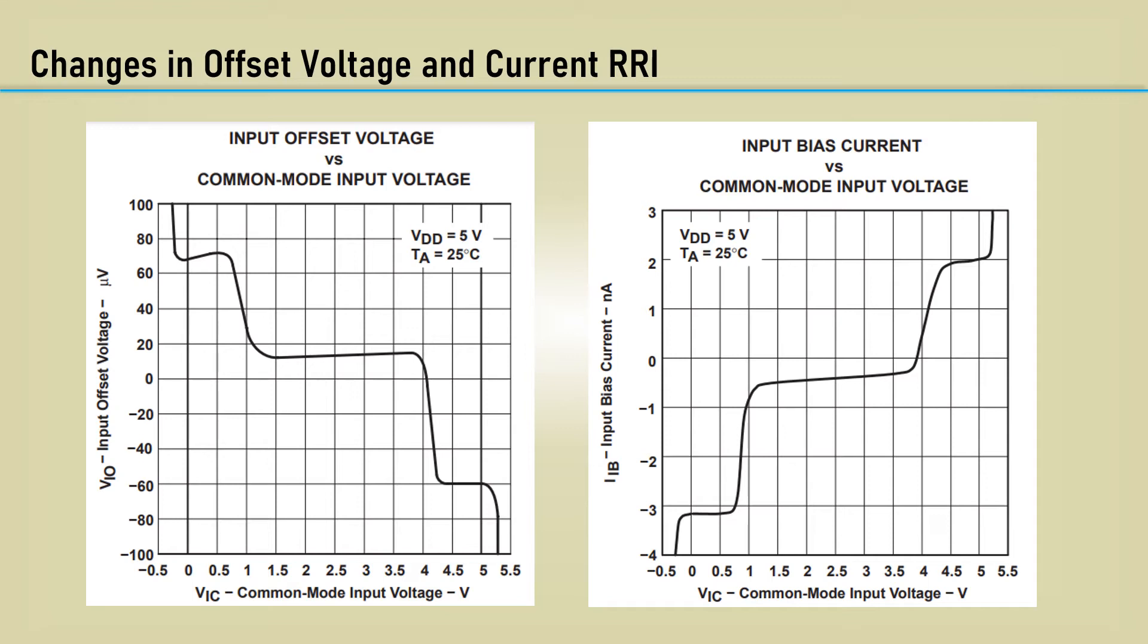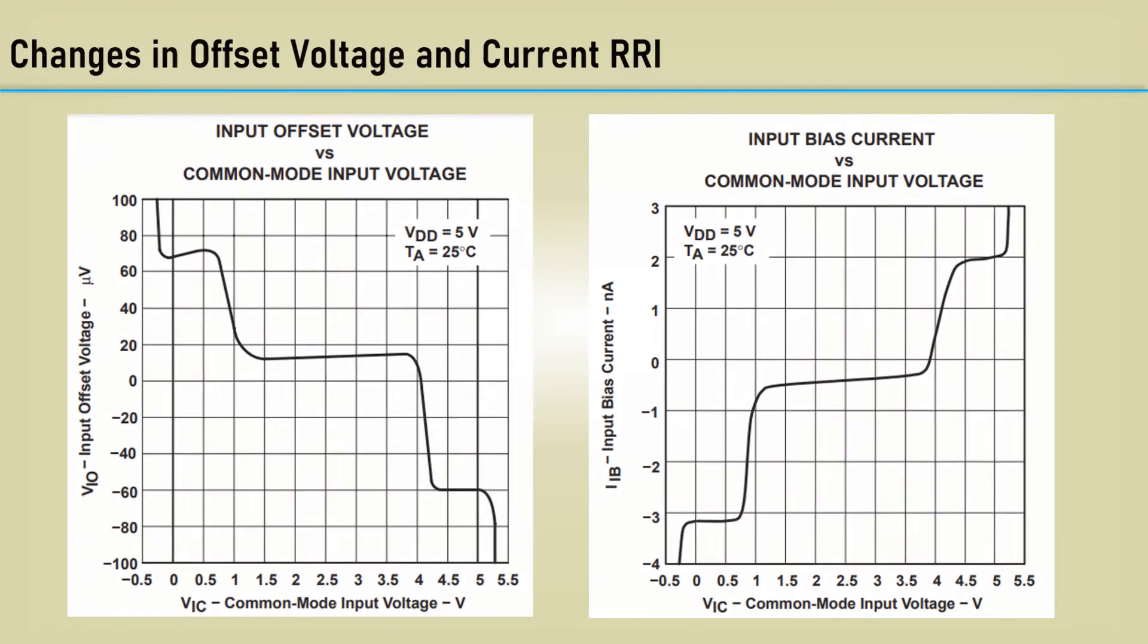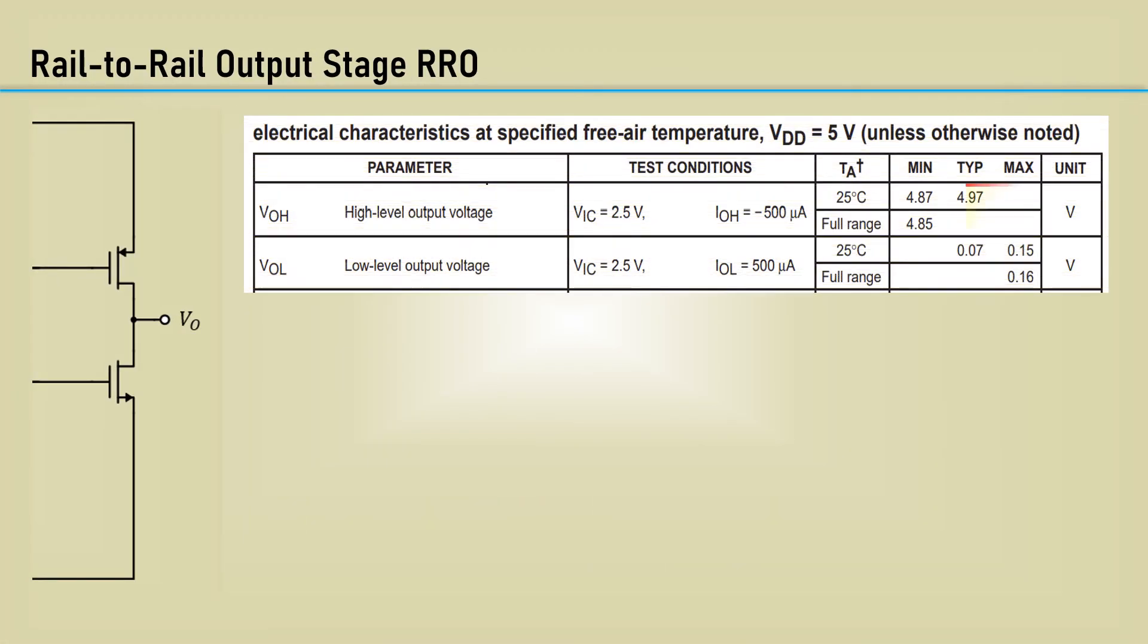Remember that input bias cancellation resistor I told you not to use? Well, one might help with this particular input. While rail-to-rail inputs really do completely go rail-to-rail, the outputs do not.